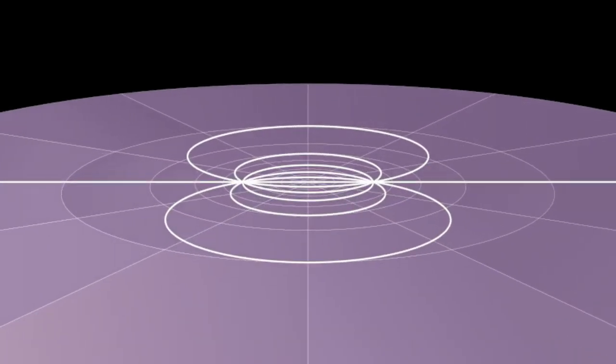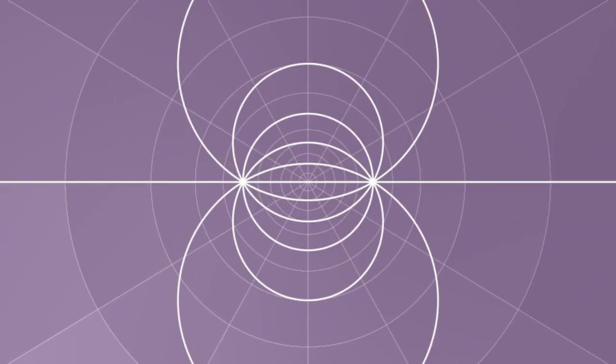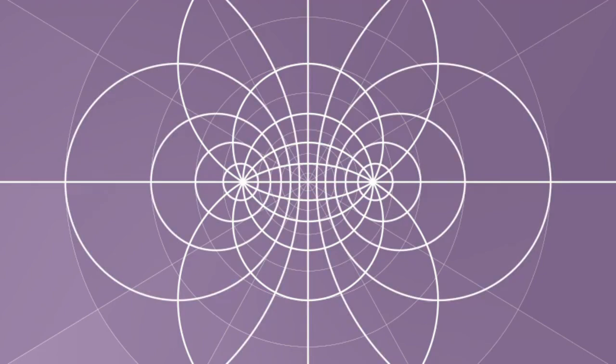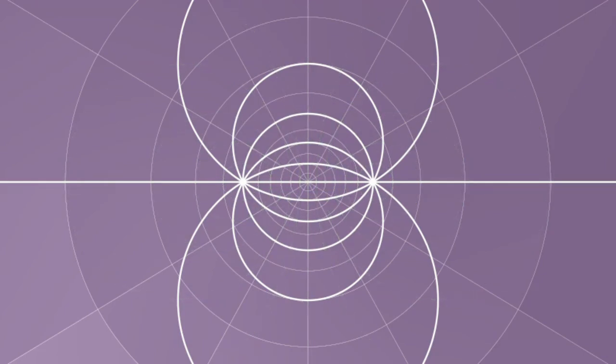We can do a similar analysis for a boost in the x-direction. As promised, the orbits of the x-boost lie transverse to the orbits of the x-rotation. And the vector field looks like this.